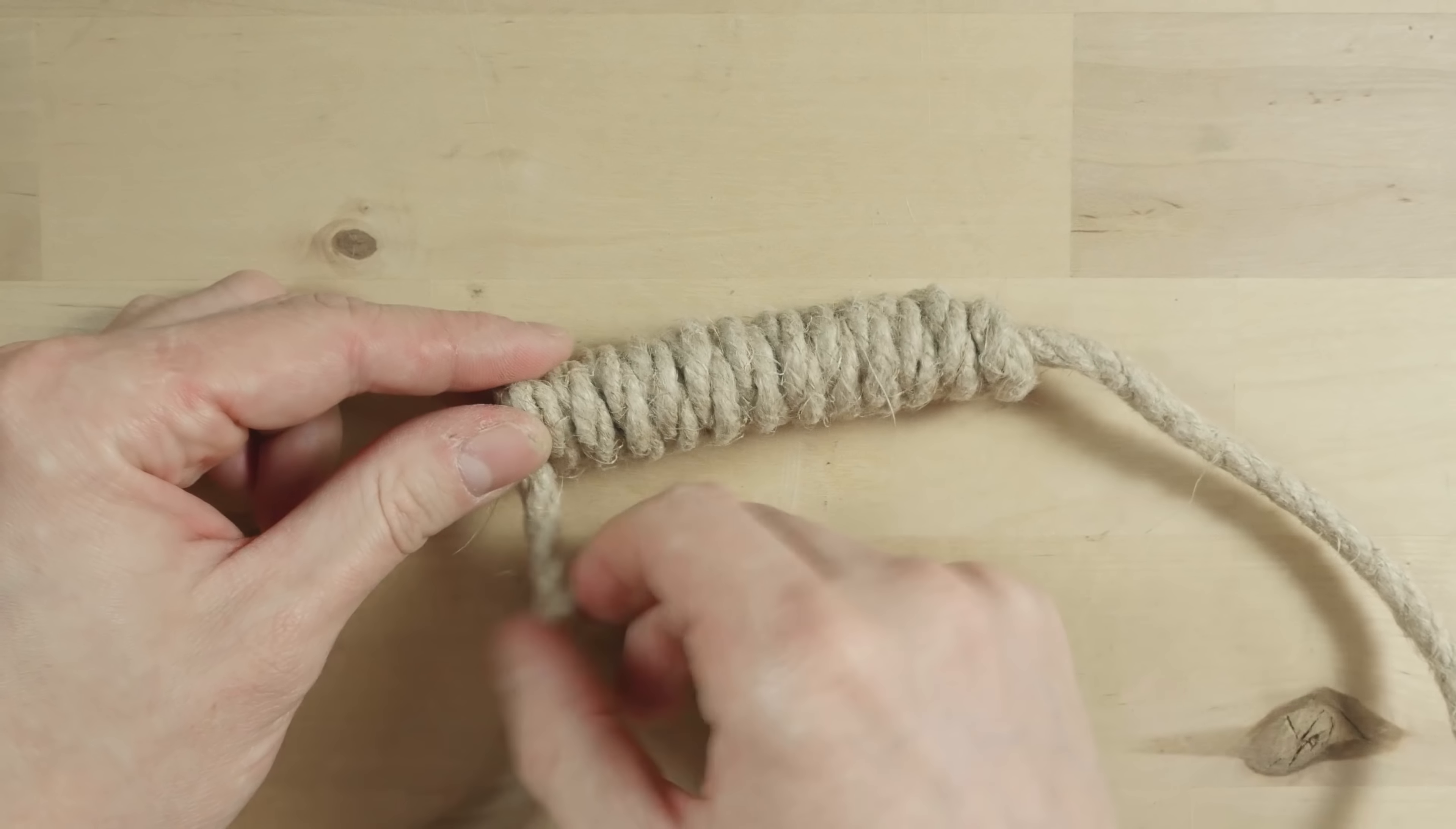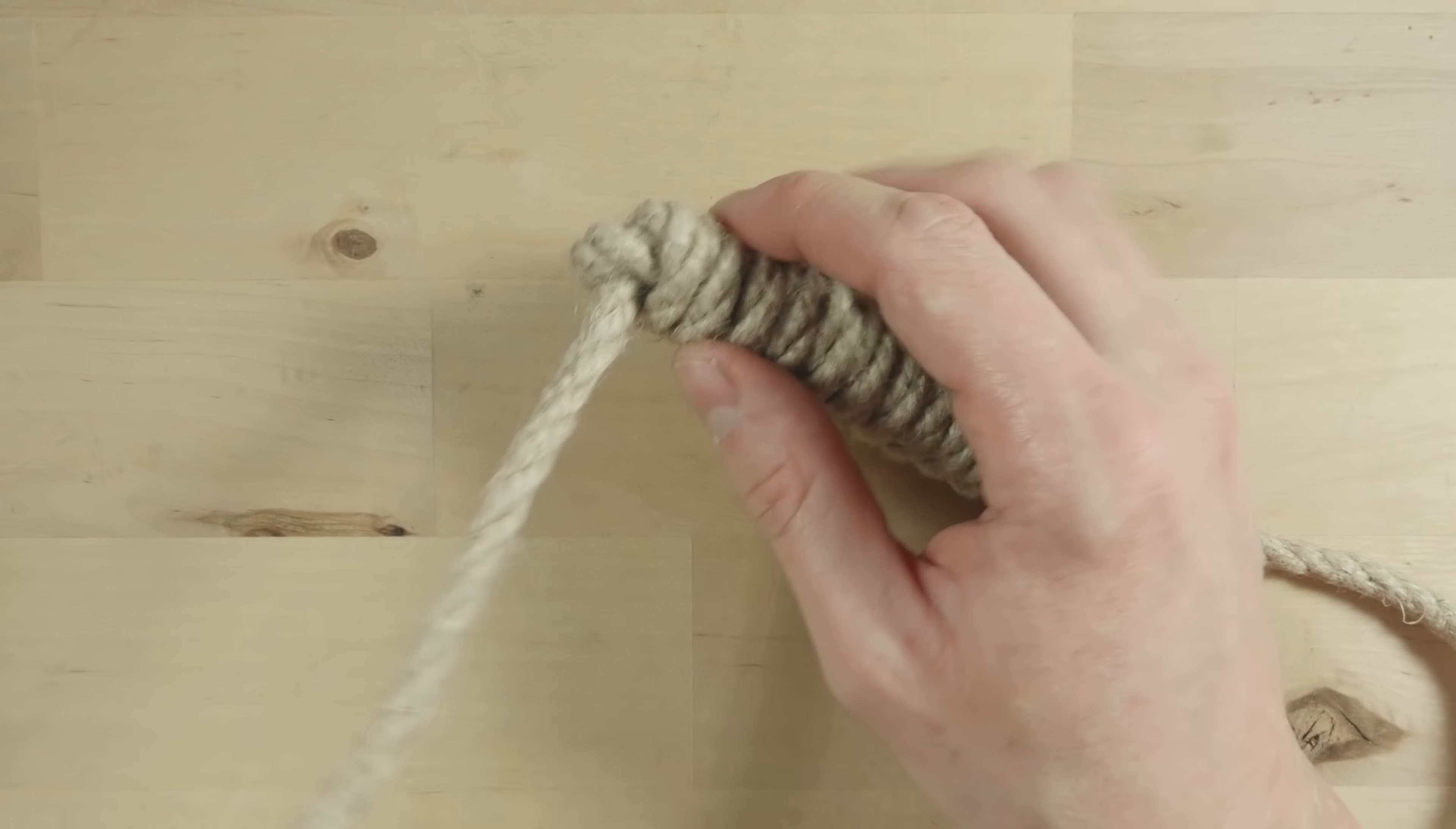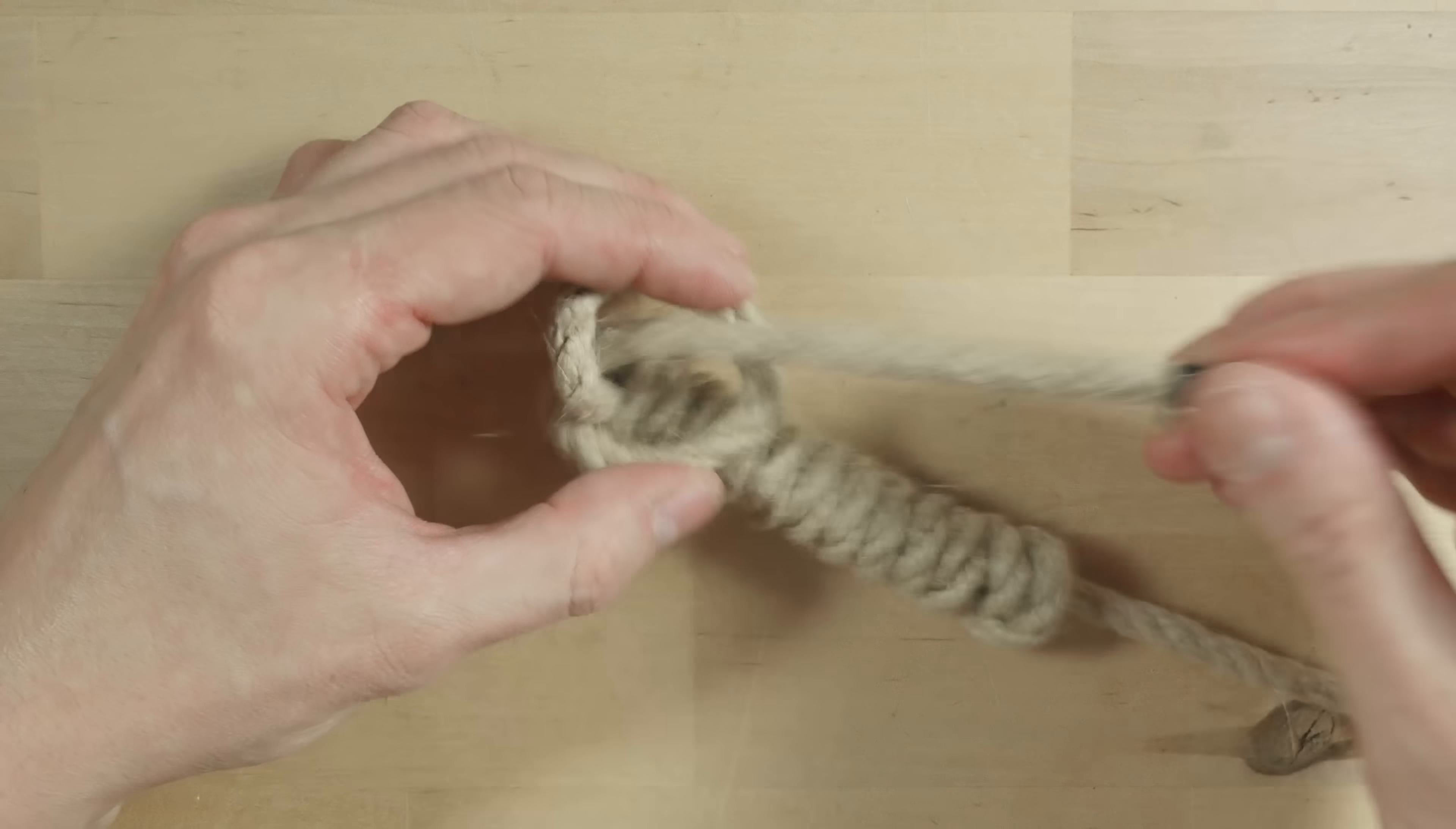If you want to further secure this end to prevent it from slipping out, tie an overhand knot. Like this.